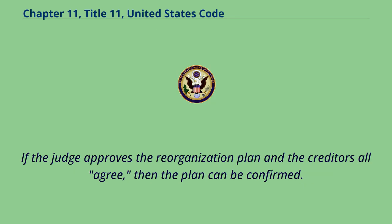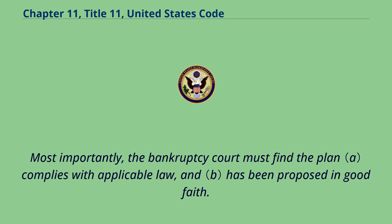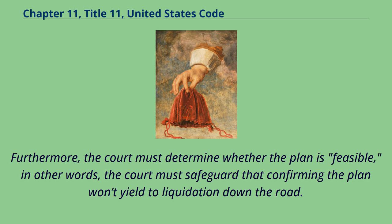If the judge approves the reorganization plan and creditors all agree, the plan can be confirmed. Section 1129 of the Bankruptcy Code requires the bankruptcy court reach certain conclusions prior to confirming or approving the plan and making it binding on all parties. Most importantly, the bankruptcy court must find the plan complies with applicable law and has been proposed in good faith. Furthermore, the court must determine whether the plan is feasible — that is, confirming the plan won't yield liquidation down the road.